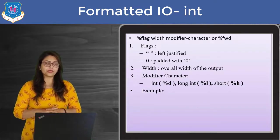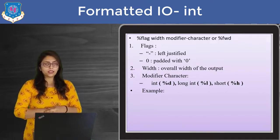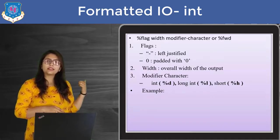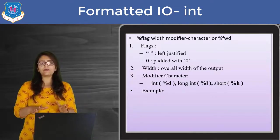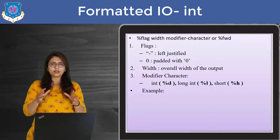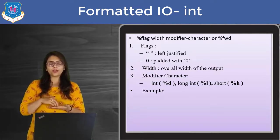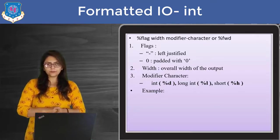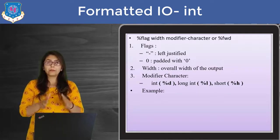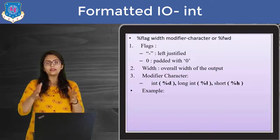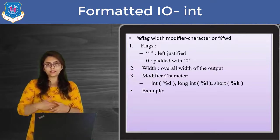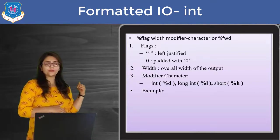Flags can be of two types. First, sometimes you want to justify text — you can justify to the right or left side. If you want to justify text to the left side, you can use the minus sign. By default, text will be on the right side. You will not see the difference when dealing with the same width, but if the width is greater than the number itself, then you can notice the difference. The minus sign is used for left justification.